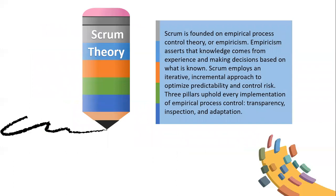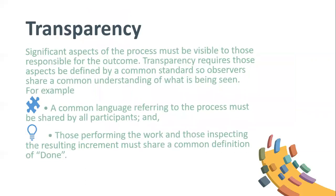Scrum theory. Scrum is founded on empirical process control theory, or empiricism. Empiricism asserts that knowledge comes from experience and making decisions based on what is known. Scrum employs an iterative, incremental approach to optimize predictability and control risk. Three pillars uphold every implementation of empirical process control: transparency, inspection, and adaptation.